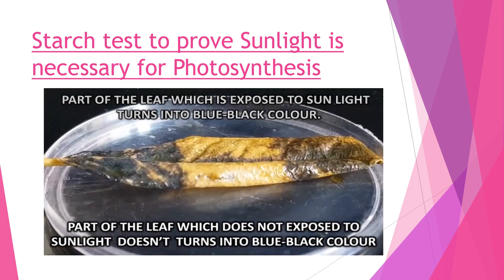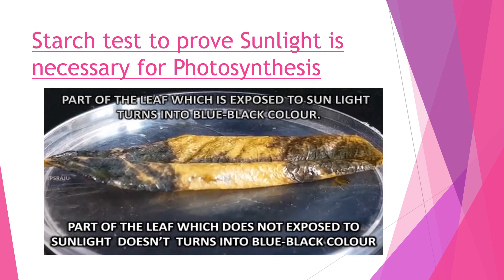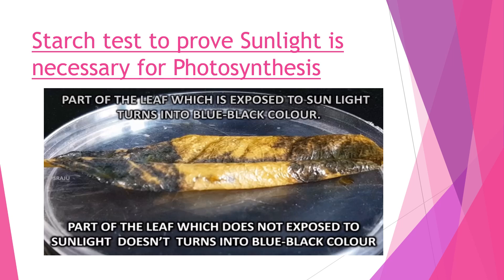The part of the leaf which was exposed to sunlight turns into a blue-black color, indicating that photosynthesis took place in this part. The part of the leaf which was not exposed to sunlight - covered by the black paper - does not turn into blue-black color, indicating that photosynthesis did not take place in that part.